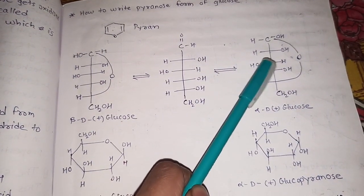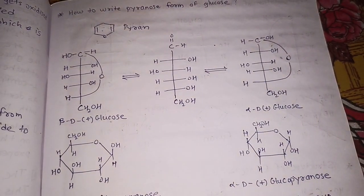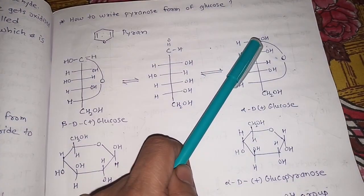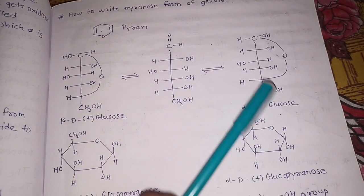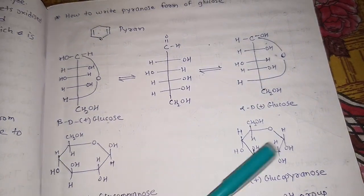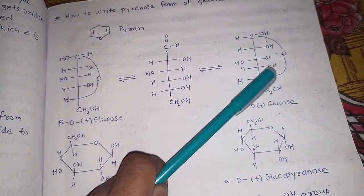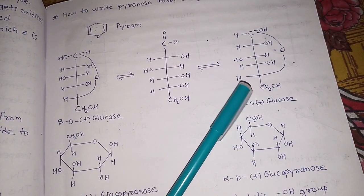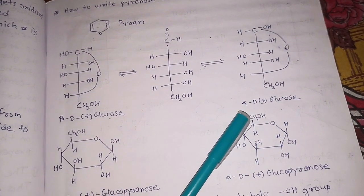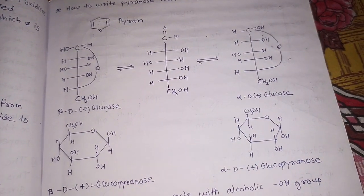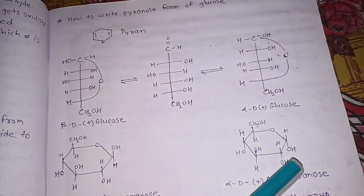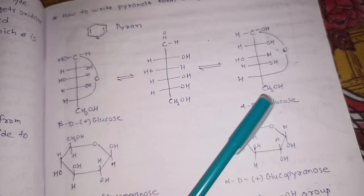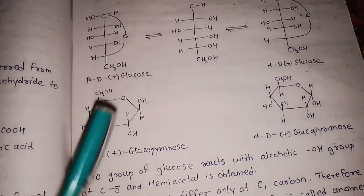We draw a six-membered ring because there are six atoms in the ring — one oxygen and five carbons. For the Howarth formula, groups on the right side in the Fisher formula are written below the ring, and groups on the left side are written above. CH2OH is always written above the ring. Using these rules, we draw both alpha-D-glucopyranose and beta-D-glucopyranose.